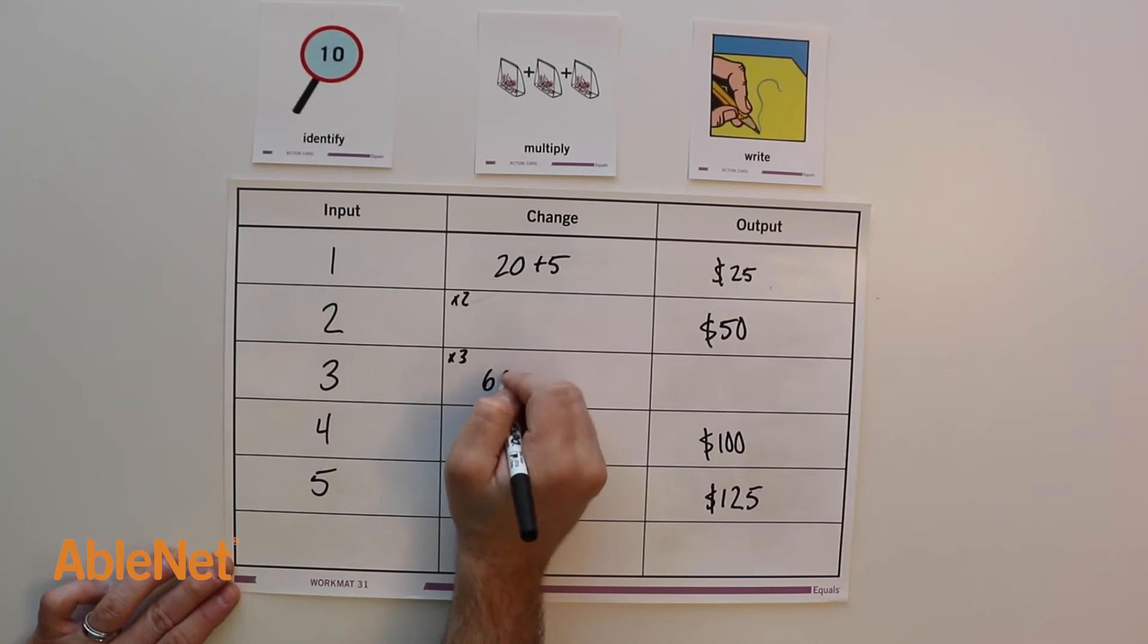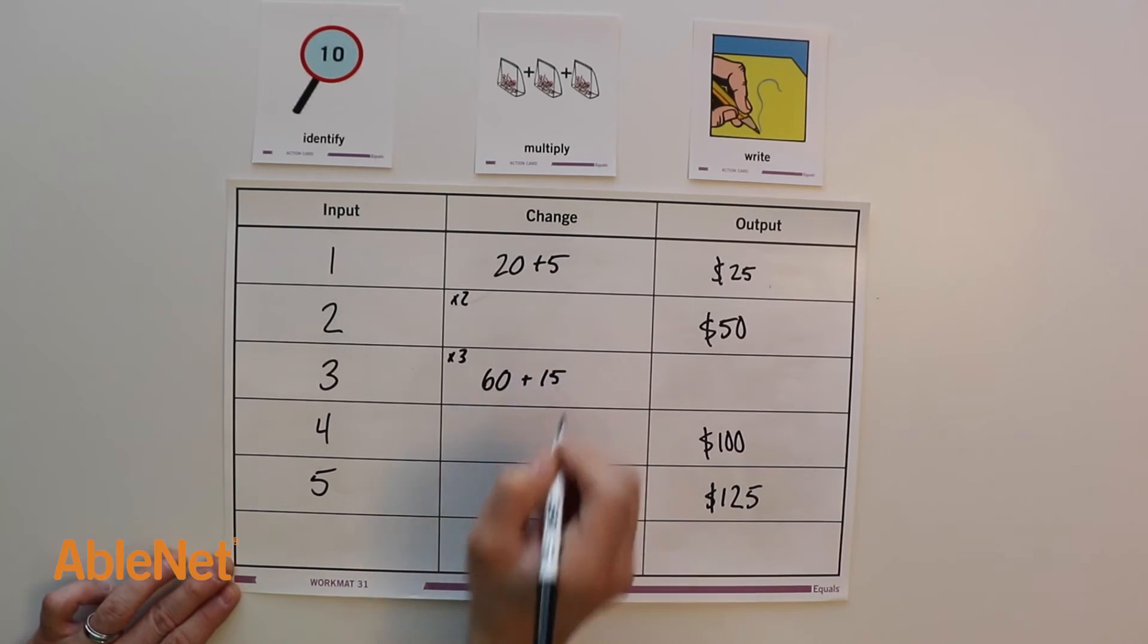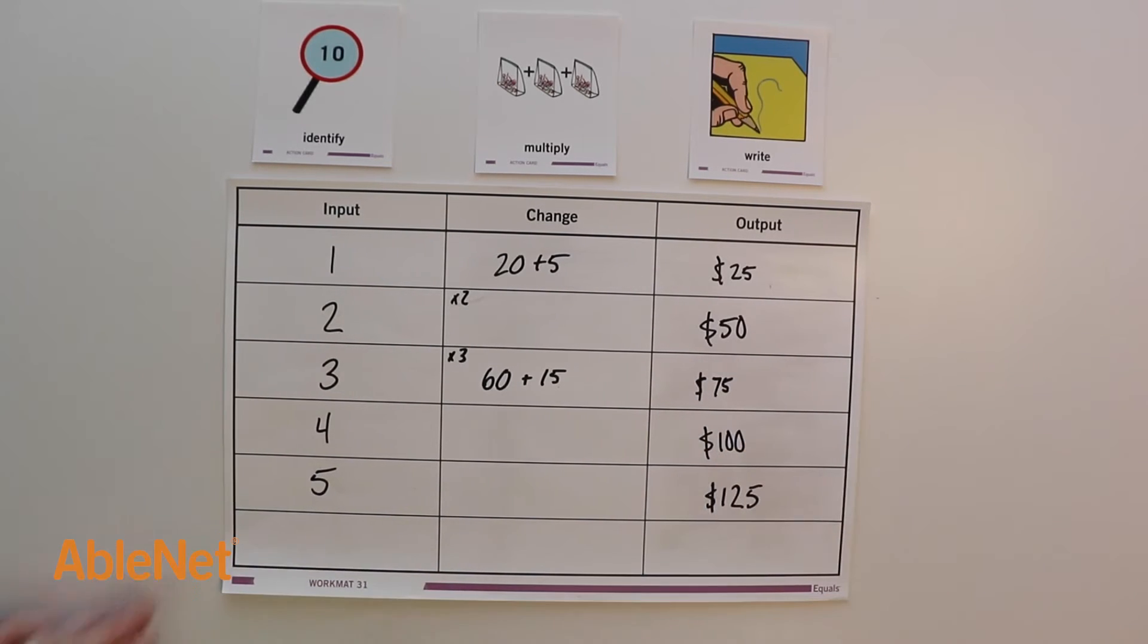3 times 20 equals 60. 3 times 5 equals 15. 60 plus 15 equals 75. The cost of three cases of sauce is $75.